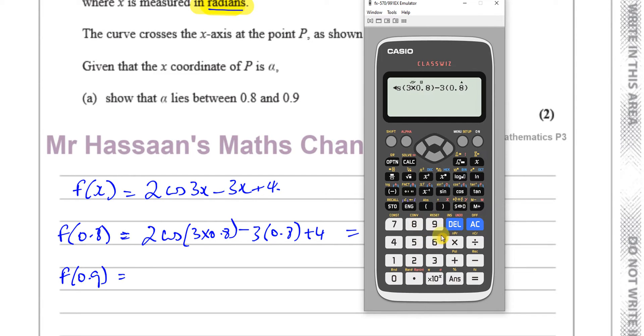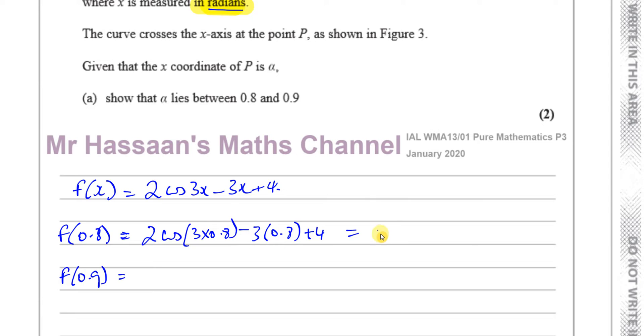Okay. Plus 4. Okay, that gives me a value 0.125. So 2 cosine 3 times 0.8 minus 3 times 0.8 minus 3 times 0.8 plus 4. Yep. So that gives me 0.1252. That's 0.1252. 0.1252.